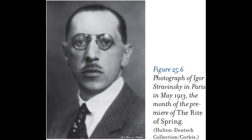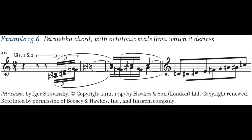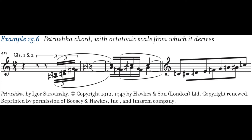Igor Stravinsky (1882–1971) was raised in St. Petersburg and studied composition privately with Rimsky-Korsakov. In 1910, Sergei Diaghilev commissioned him to write the first of three ballets for the Ballets Russes, which made Stravinsky famous. The Firebird (1910) stems from Russian nationalism and Rimsky-Korsakov's exoticism. Some of Stravinsky's distinctive stylistic traits emerge in Petrushka (1910–1911), including repetitive melodies and rhythms over static harmony, blocks of sound that interrupt and alternate without transitions, and sharp dissonances that are often octatonic or derived from superimposed triads. Stravinsky evokes a carnival atmosphere by borrowing and elaborating Russian folk tunes and Viennese waltzes.